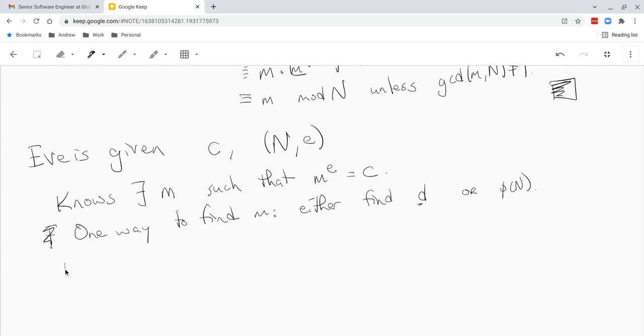So either find d or find phi of n, both are the same. So therefore we can say if Eve is able to discover d or if she's able to compute phi of n, then she can recover m, and that would be bad.